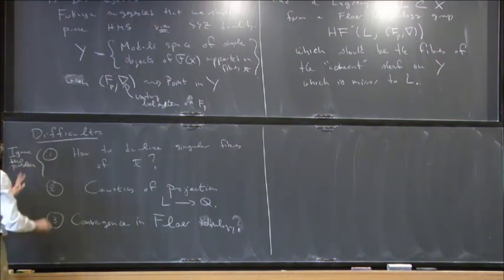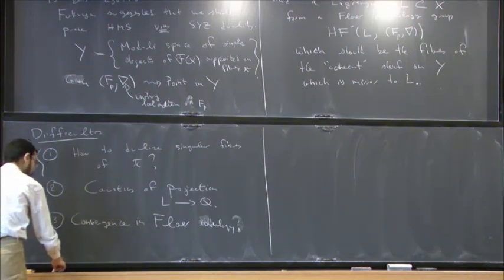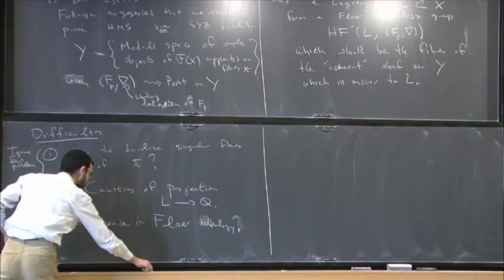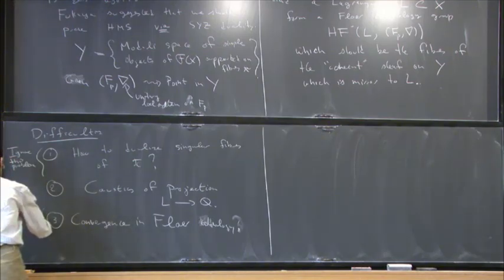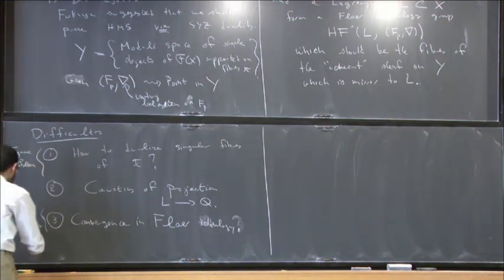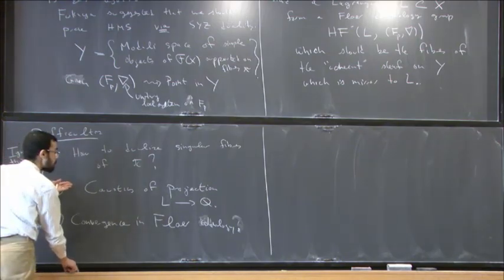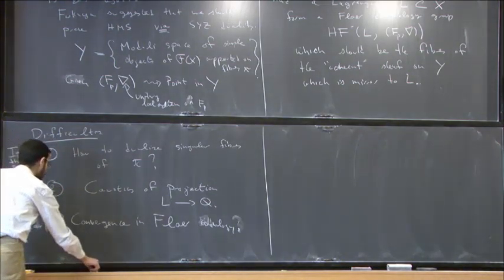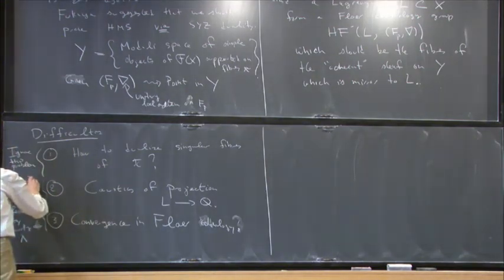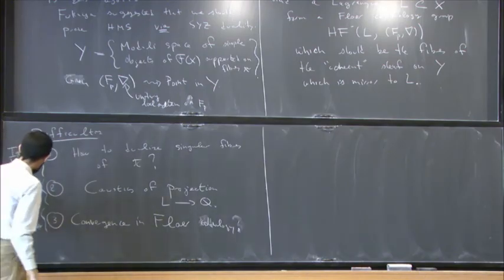We ignore the singular fiber problem by working in a setting with no singular fibers. We resolve the convergence problem by working over something called the Novikov field — I'll come back to this in a second. And the caustics problem — maybe this is the main point — we also resolve by using a continuation method.